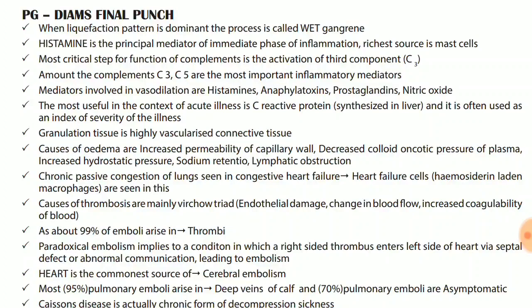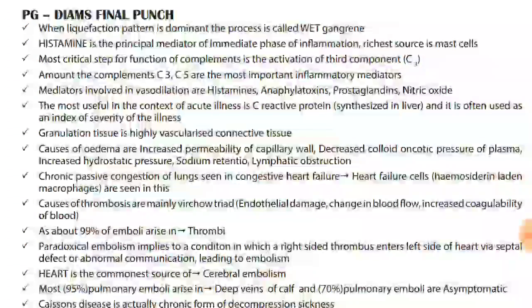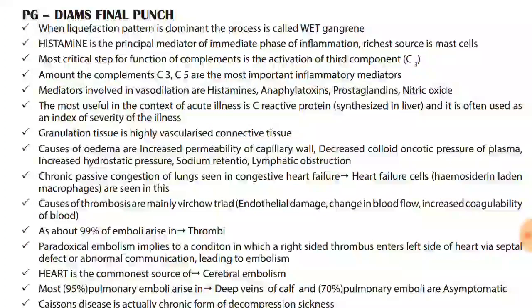Heart failure cells are seen in chronic passive congestion of lungs — not liver. These are hemosiderin-laden macrophages. Just remember: heart failure cells are seen in lungs.